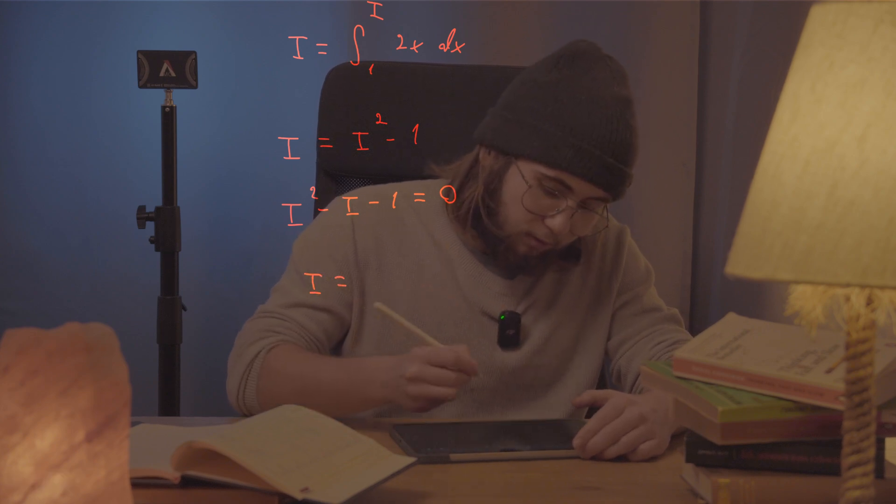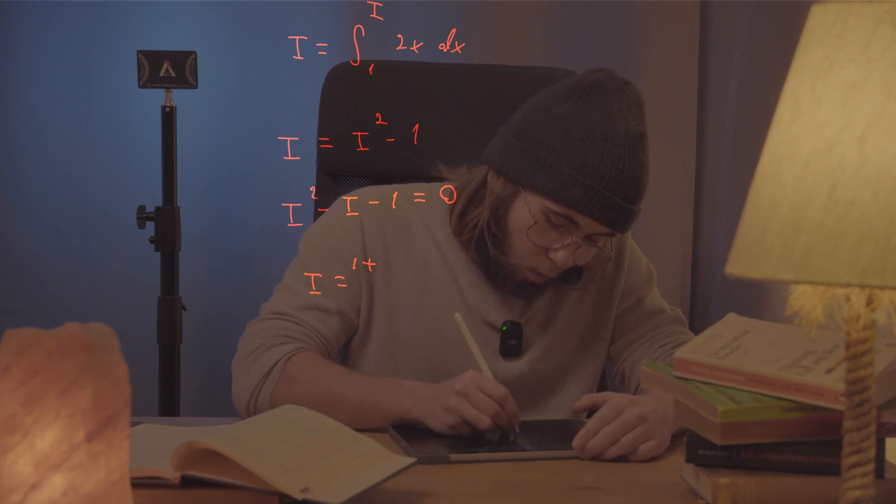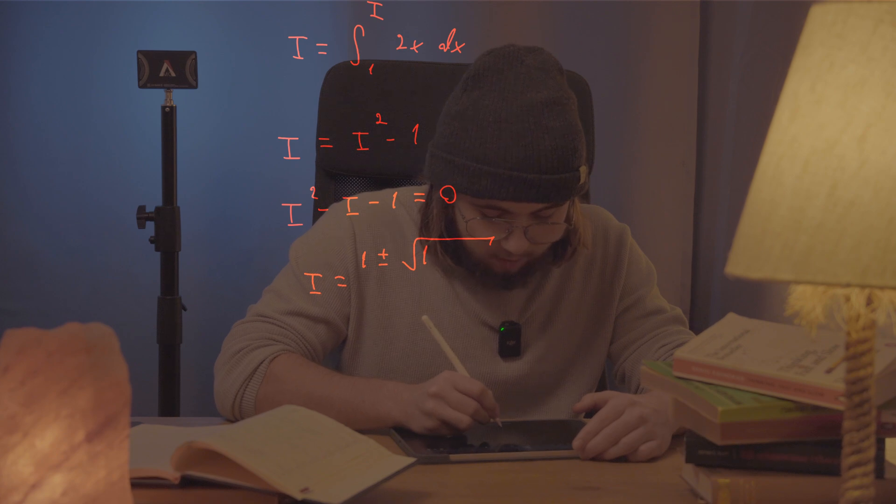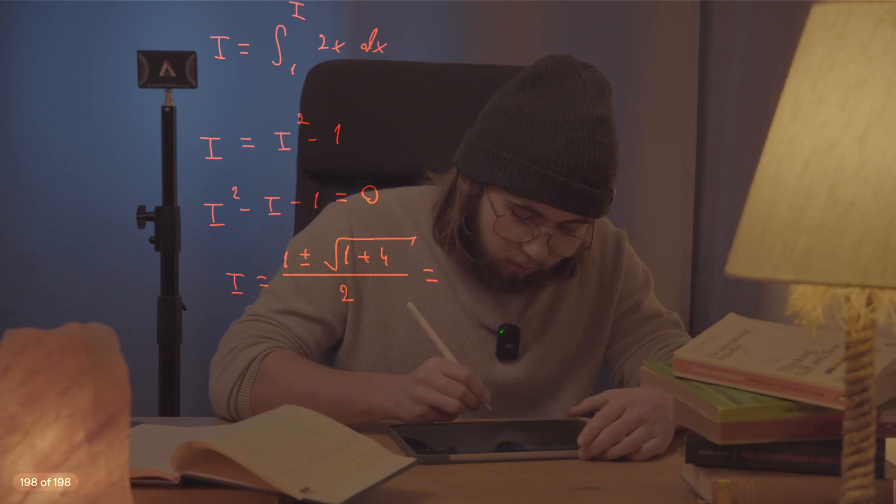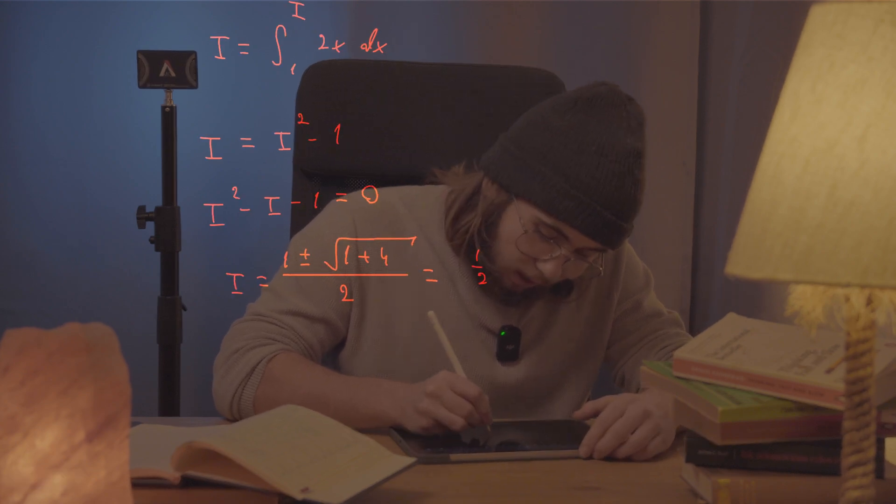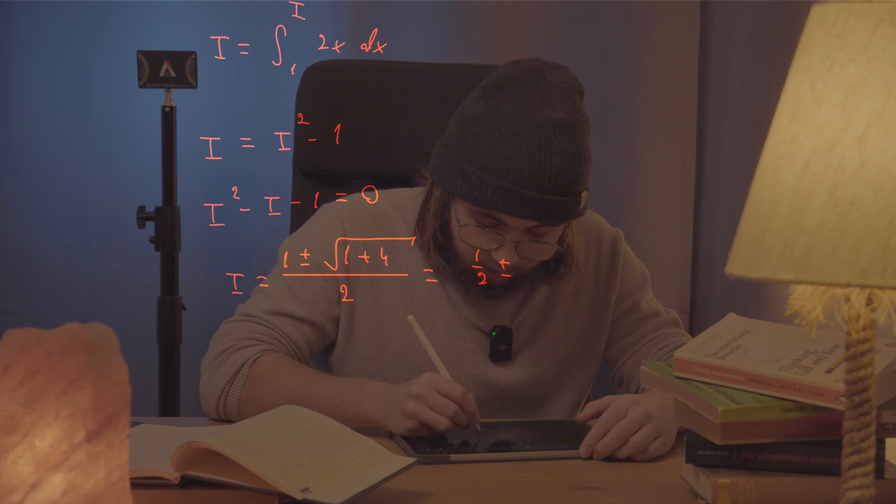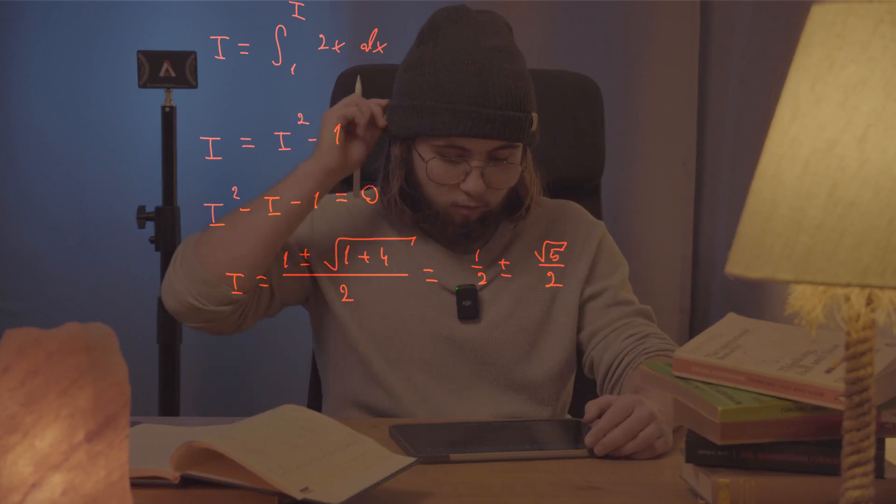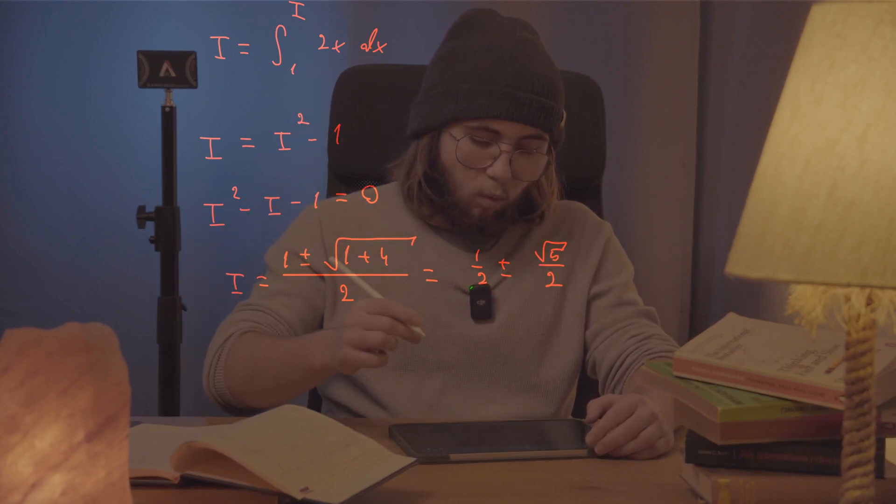that I is equal, by the quadratic formula, to one plus or minus the square root of one plus four, all divided by two, which is going to be one-half plus or minus the square root of five over two. So the square root of five over two—well, it can't really be one